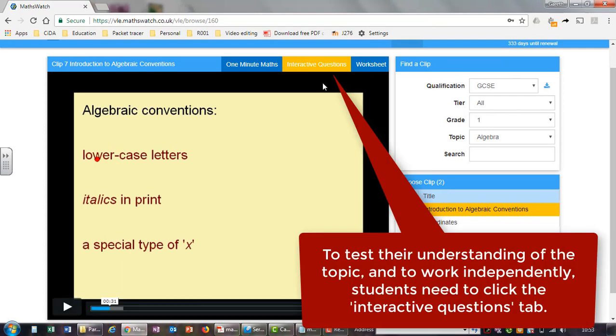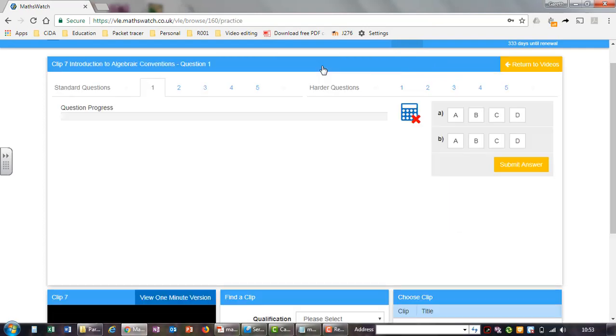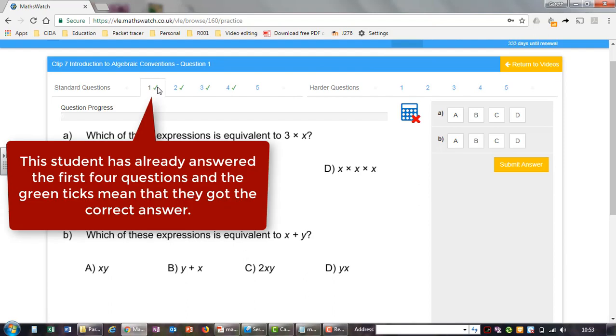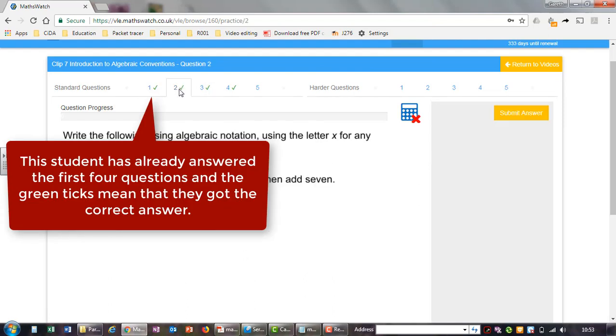To test their understanding of the topic and to work independently, students need to click the Interactive Questions tab. This student has already answered the first 4 questions and the green ticks mean that they got the correct answers.